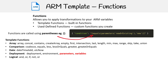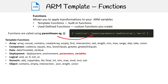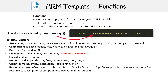Then you have logical operators like and, or, if, not. You have numerical functions like add, div, float, int, min, max. You have object functions like contains, empty, intersection. And then you have resource functions like extensionResourceId, providers, reference, etc.